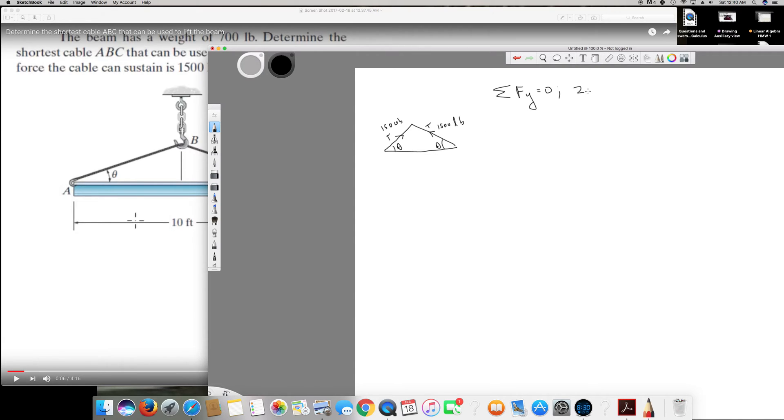And it's acting - to find the y direction I'm going to take sin(θ), 2T sin(θ) minus - I have to subtract the weight because it's acting downward - so 2T sin(θ) - 700 = 0.